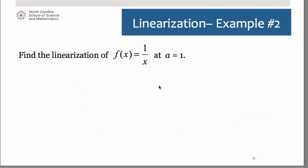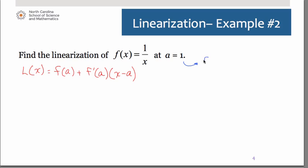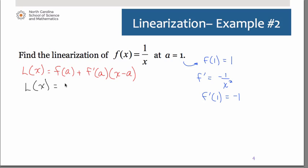Now let's look at another function: 1 over x at a equals 1. Using our linearization formula, f(1) equals 1. Rewriting the function as x to the negative 1, the derivative is negative 1 over x squared, so f′(1) equals negative 1. Substituting, L(x) equals 1 plus (negative 1) times (x minus 1). Distributing and simplifying gives negative x plus 2 as the linearization of 1/x at x equals 1.